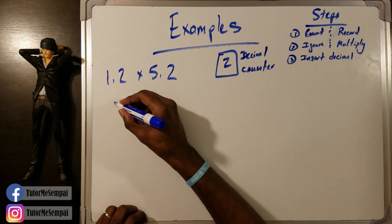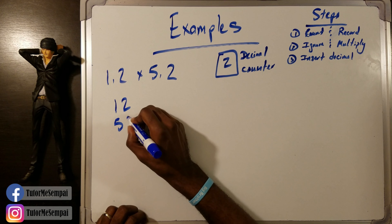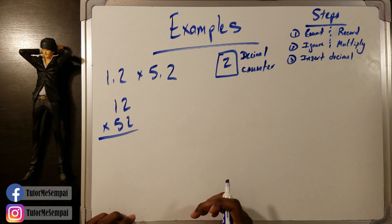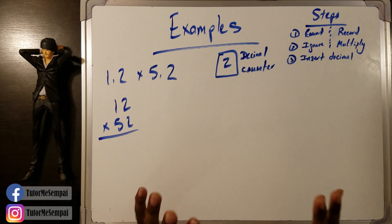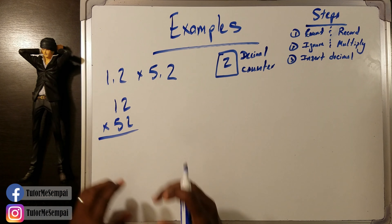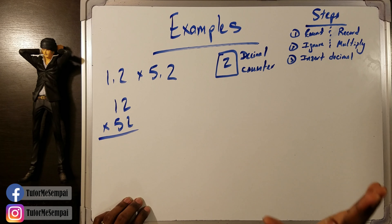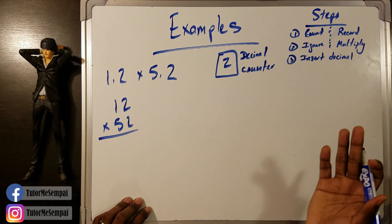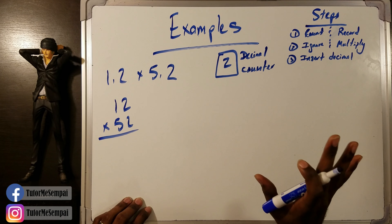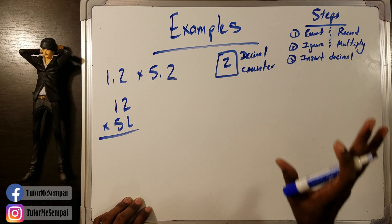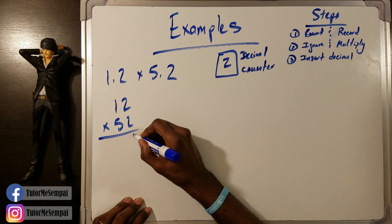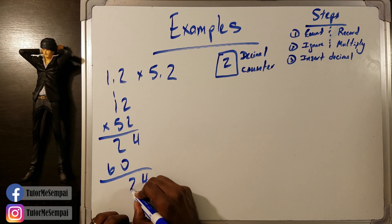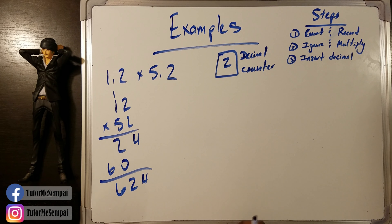Now we ignore and multiply. So I'm going to set it up as 12 times 52 — we have no decimal here, we ignore the decimal. Now we're going to multiply. You can choose to multiply any way you want. I'm going to stack them on top, but do it however you feel most comfortable. If you're using a calculator you can just plug it in, but if multiplying by hand, do it however you feel most comfortable. So we get 624.